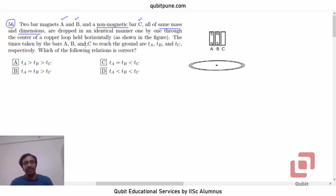The time taken by the bars A, B and C to reach the ground are TA, TB and TC respectively. Which of the following relations is correct? TA greater than TB greater than TC, TA equal to TB greater than TC, TA equal to TB less than TC, and option D, TA less than TB less than TC.